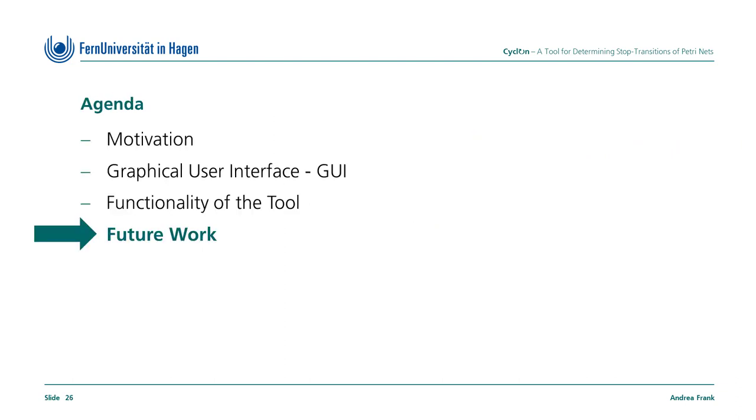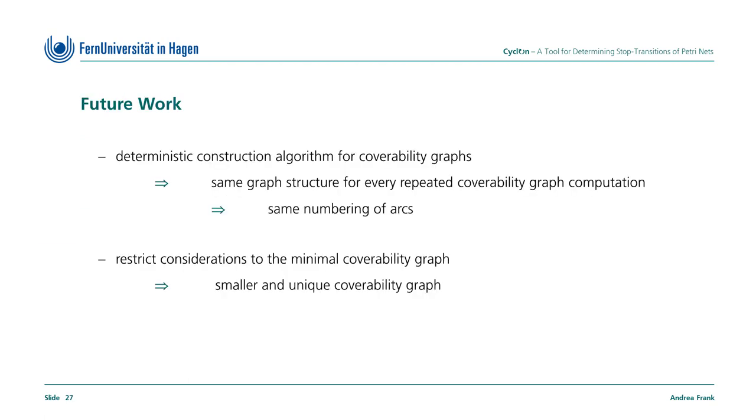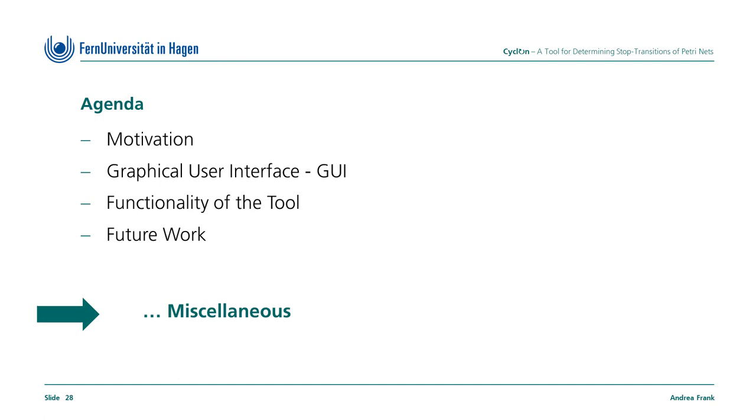We are leaning towards the end of this presentation. However, I'd like to give a brief outlook on planned extensions of the tool. A possible improvement would be to replace the current non-deterministic construction algorithm for a coverability graph, which we took from a library, by a more deterministic one. Then, each repeated computation of the coverability graph would result in the same graph structure and consequently in the same numbering of arcs. We are also considering restricting the coverability graph to the minimal coverability graph. The advantage is that the minimal coverability graph is on the one hand smaller and on the other hand also unique.